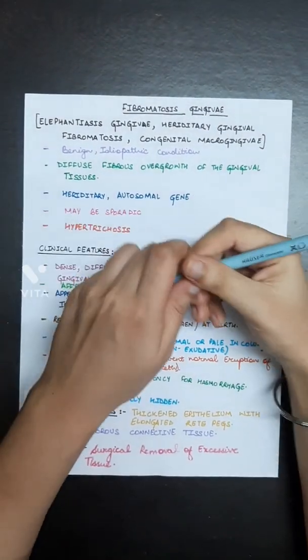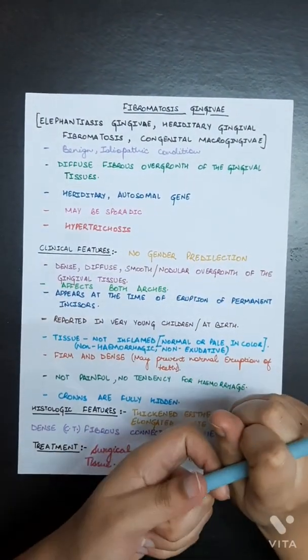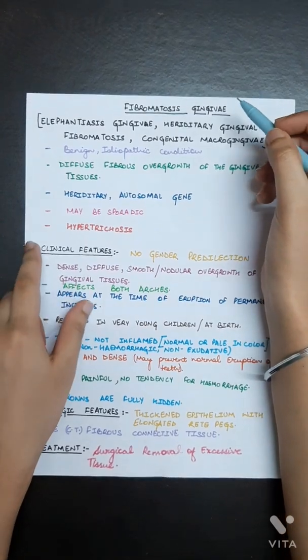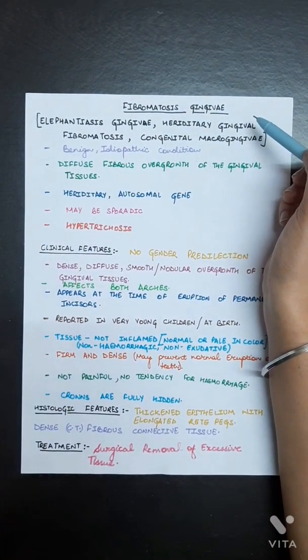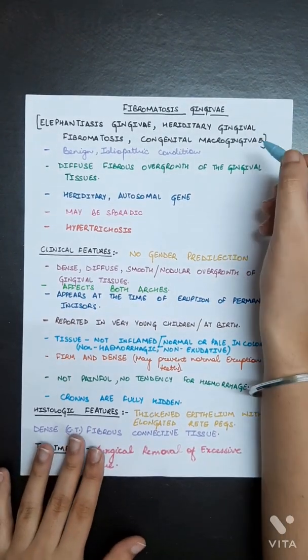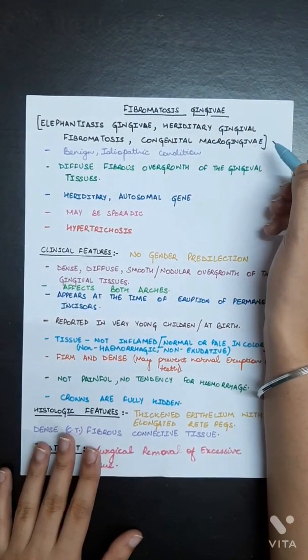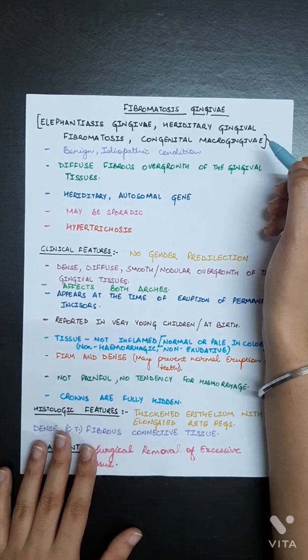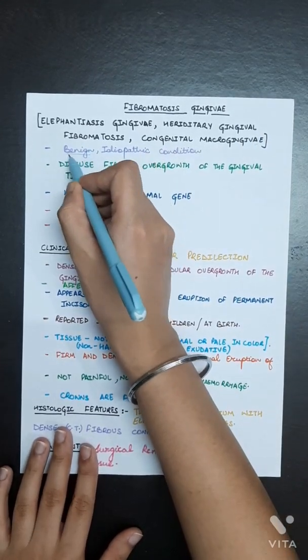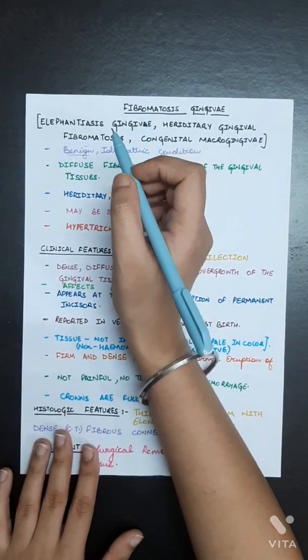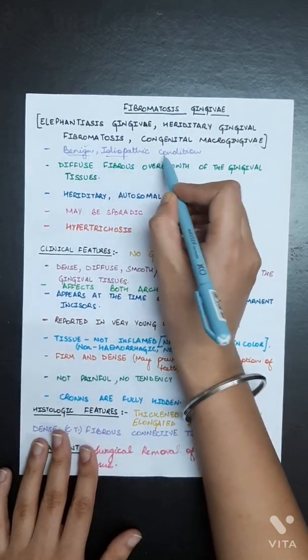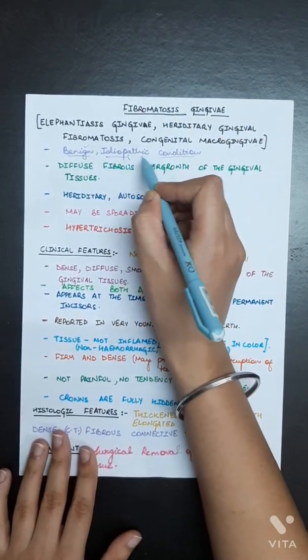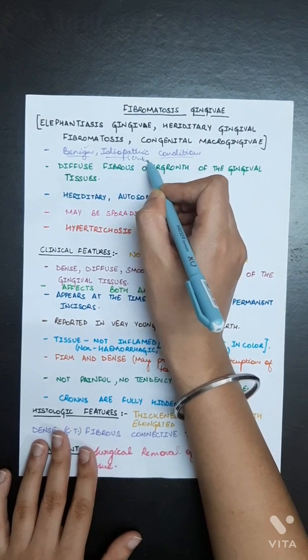Hello all, today we are going to discuss fibromatosis gingiva, which is also known as elephantiasis gingiva, hereditary gingival fibromatosis, and congenital macrogingiva. It is basically a benign, non-malignant condition that won't spread. It is a benign idiopathic condition with an unknown cause.